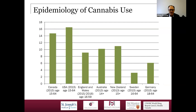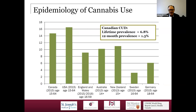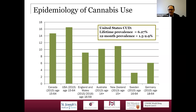How common is cannabis use disorder? In Canada, the lifetime prevalence is estimated to be around 7%, and the 12-month prevalence is a bit over 1%. In the U.S., lifetime prevalence is about 6%, with 12-month prevalence estimated between 1.5% and 3%. Cannabis use disorder seems to affect a relatively small minority of individuals who use cannabis. Among active cannabis users in the NESARC epidemiological study, approximately 8% met criteria for dependence — about 1 in 10 active users.